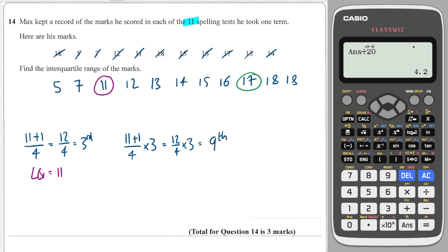So it's the ninth term in the sequence, so I go 1, 2, 3, 4, 5, 6, 7, 8, 9, and it's 17. So the upper quartile is 17. So therefore, the interquartile range is the upper minus the lower, in this case it is 6.